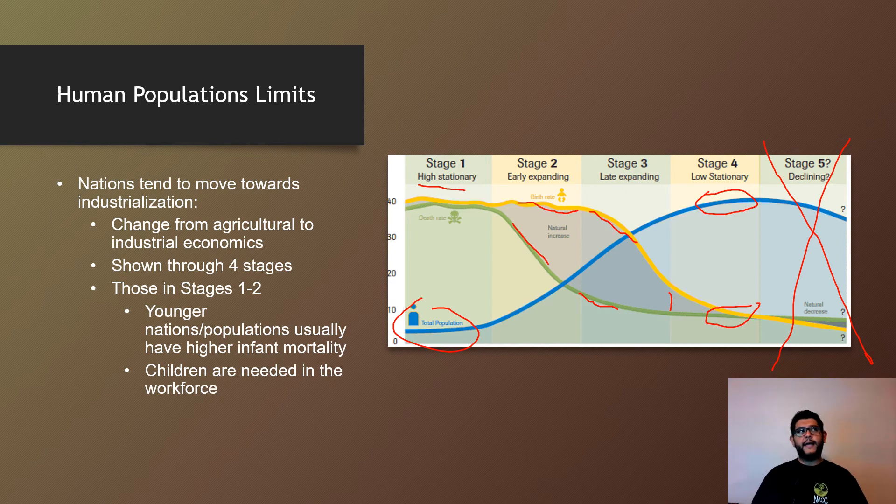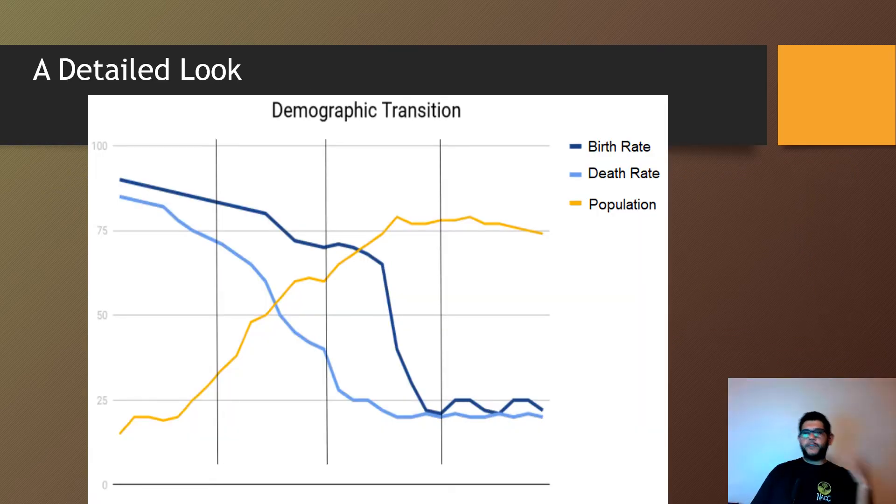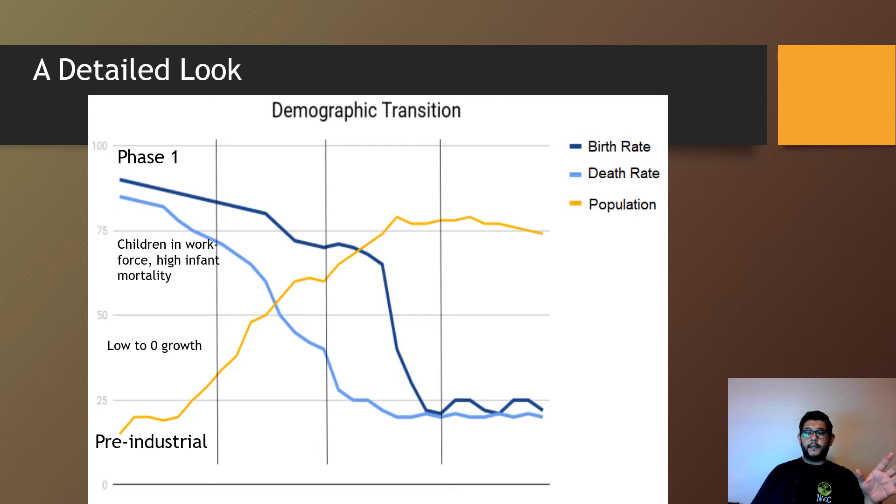Let's look at how this ties in with some of the other stuff we learned most recently about human populations. We start off with demographic transition, and the first phase is stage one.